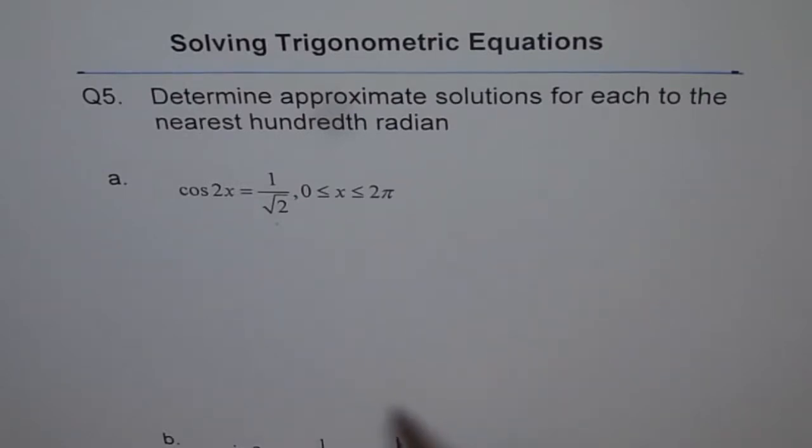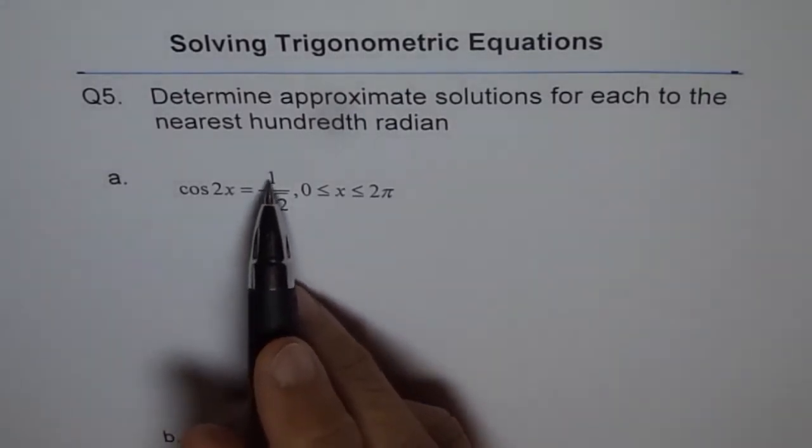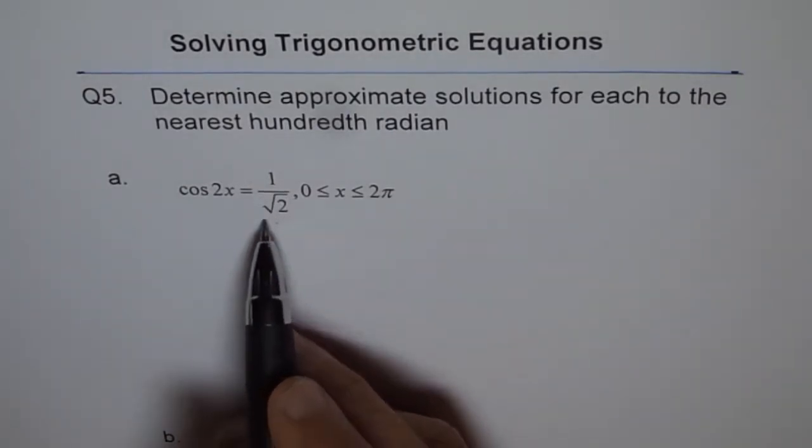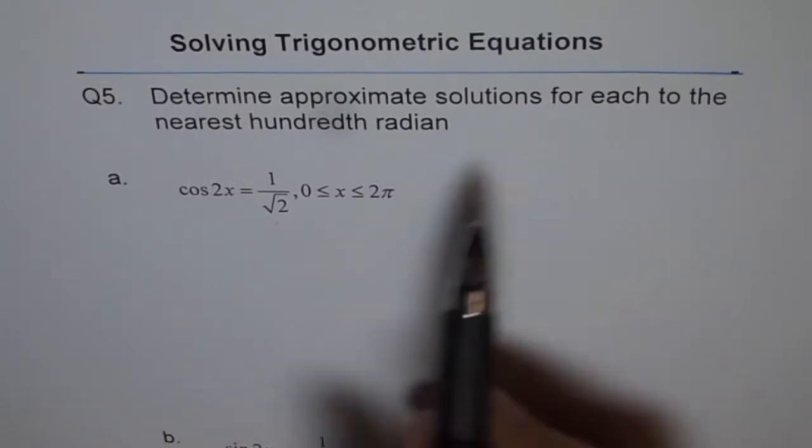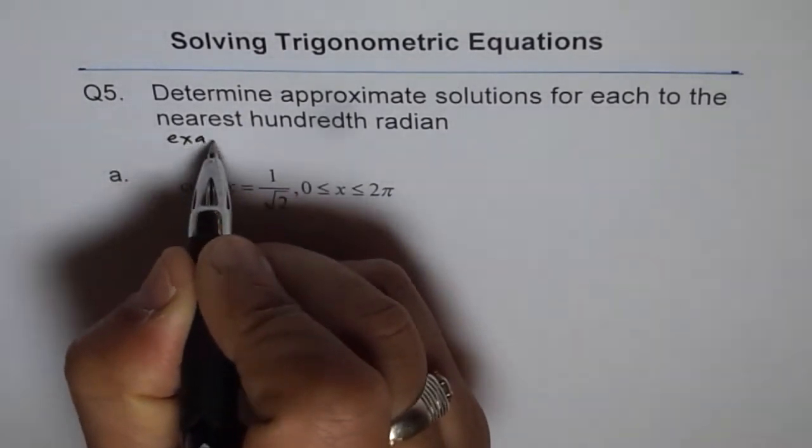Now let's try to analyze this question. It says cos 2x equals 1 over square root 2. So 1 over square root 2 reminds us of a special triangle, correct? So I will write down my answer in exact value, not to the nearest hundredth.